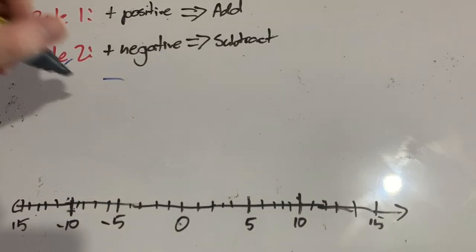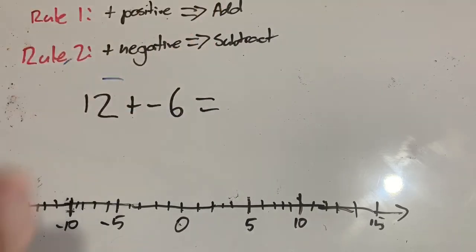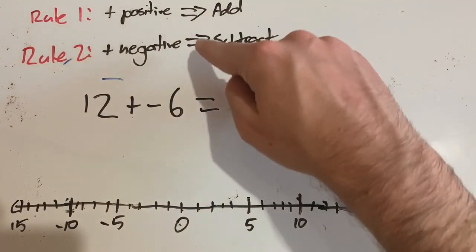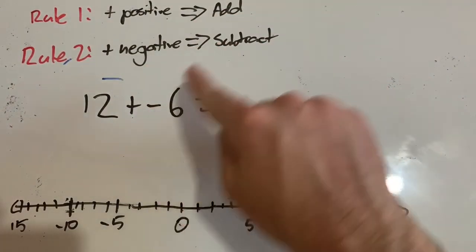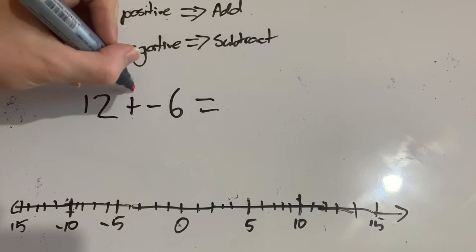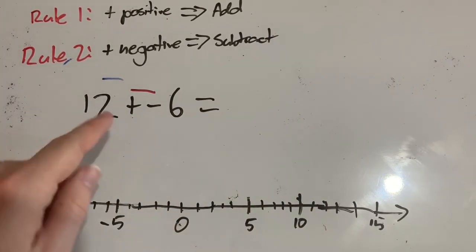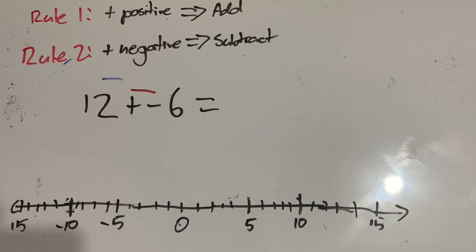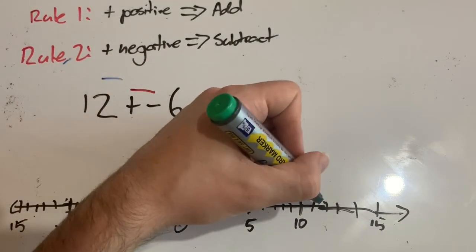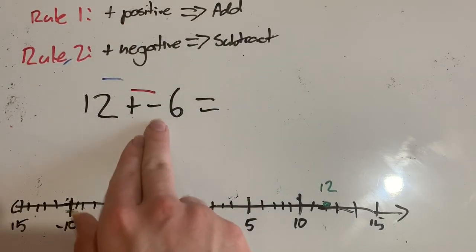Let's try 12 plus negative 6. What is 12 plus negative 6? Well, let's look at our rules. We are dealing with adding a negative, so we need to subtract it. So actually we are going to subtract 6 instead of add 6. We're going to add negative 6, which is actually just subtracting 6. So I would like to start on 12, which is here.